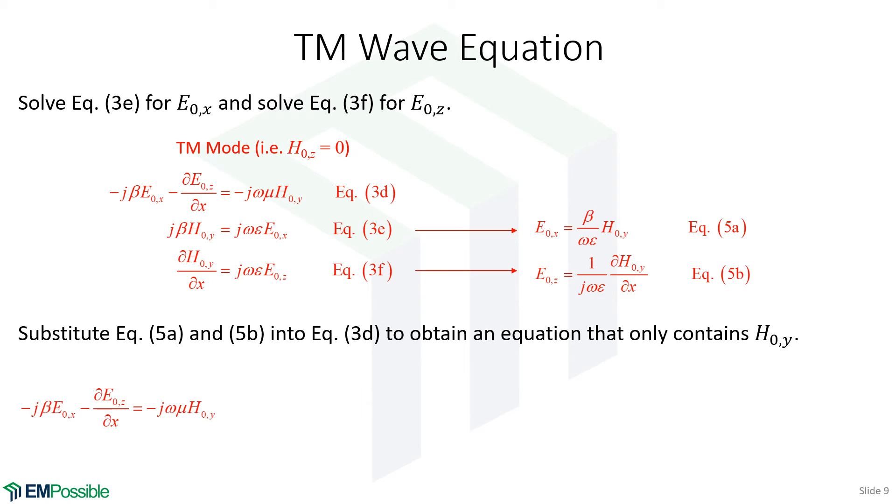We'll copy our first equation. Now we will replace E_x and E_z with equations 5A and 5B. I can simplify that equation, and I end up with the governing equation for calculating TM modes in slab waveguides.